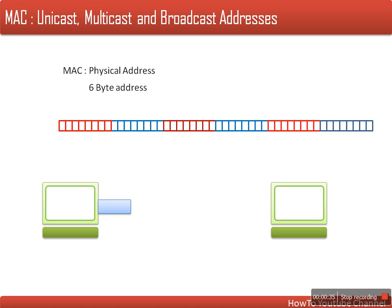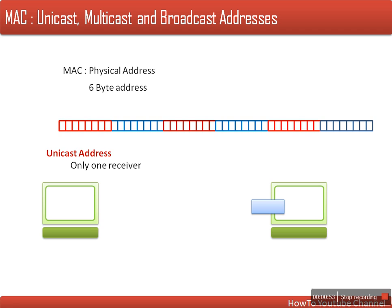If we talk about unicast address — when there is only one receiver, when we are sending a packet to another machine and there is only a single receiver for that packet, that address is known as a unicast address. As this scenario is showing, this packet is sent to this machine — only a single machine, only a single receiver — so the packet is carrying a unicast address as the destination address.